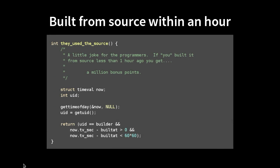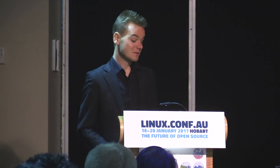You also see humorous things in source code. For example, this is a game with a little joke for the programmers: if you built it from source less than an hour ago, you get a million bonus points. The build timestamp is defined in a config header, and if you built it less than an hour ago with the same UID, the function returns true and you start with a million bonus points. It doesn't actually work on Debian, because the UID here is the UID of the builder, which is root — so it never works.